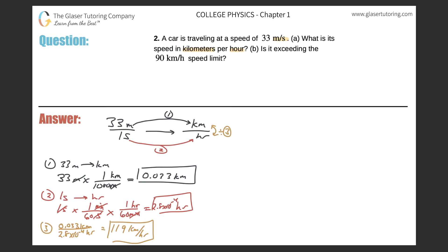So part B now, is it exceeding the 90 kilometer per hour speed limit? Well, what did we just find? We found that the car was moving at 119 kilometers per hour. And the speed limit is 90 kilometers per hour. So yeah, we are definitely exceeding that speed limit.